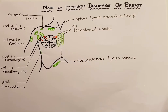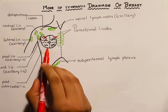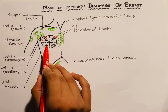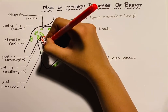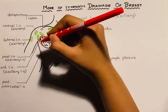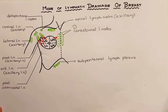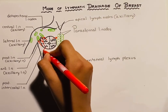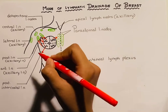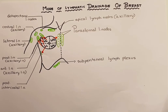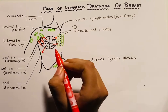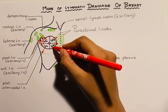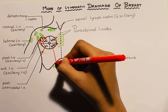Now coming to the lower quadrants, the lower lateral quadrant drains into the anterior and posterior group of axillary lymph nodes, as well as into the posterior intercostal group of lymph nodes. The lymph from the lower medial quadrant is drained into the parasternal group of lymph nodes as well as into the subperitoneal lymph plexus.